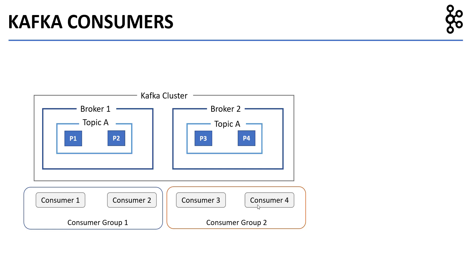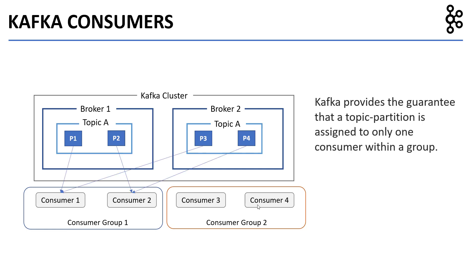If we look at how the data is consumed, from consumer group 1, consumer 1 receives data from partitions P1 and P3, and consumer 2 receives data from partitions P2 and P4. From consumer group 2, consumer 3 receives data from partitions P1 and P3, whereas consumer 4 receives data from partitions P2 and P4. As you can see, two consumers from a consumer group never receive data from the same partition at the same time. This is an important concept to keep in mind as we continue with the course.